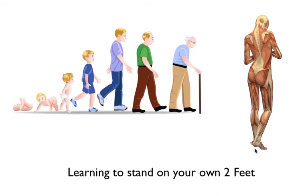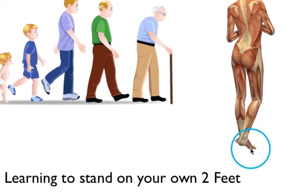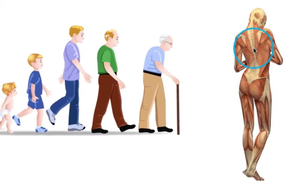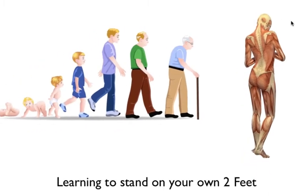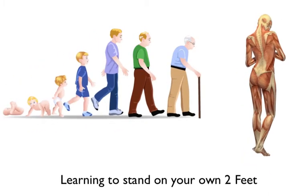Humans are the least stable of creatures, possessing the smallest base of support with the highest center of gravity. And this means that, in effect, standing for us is a constant balancing act.